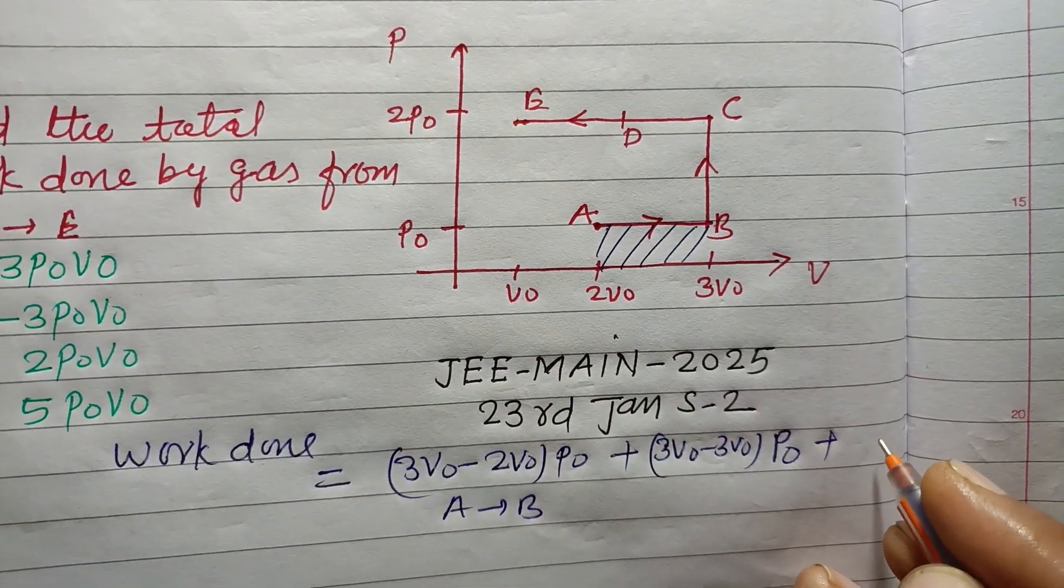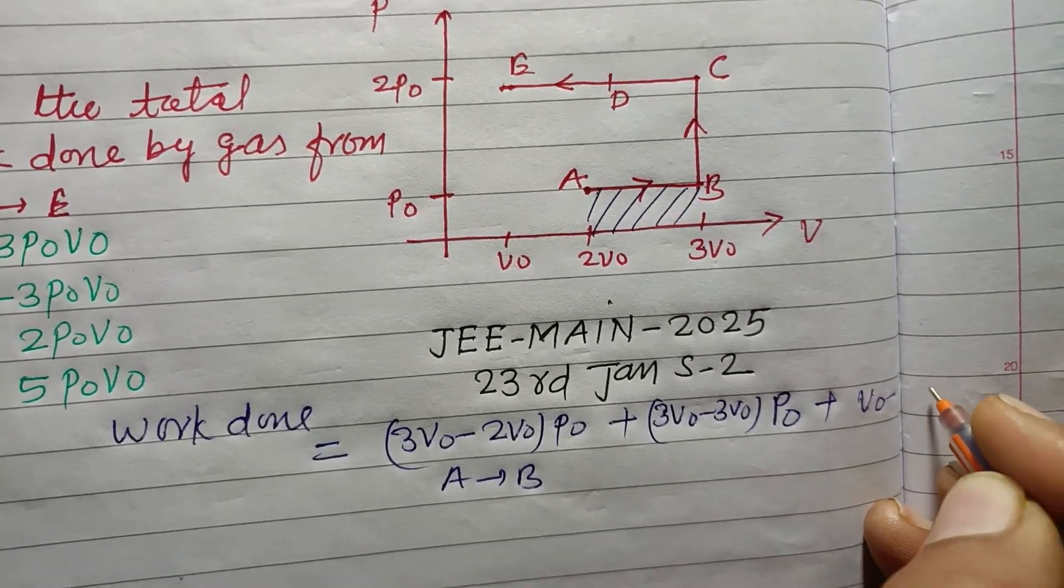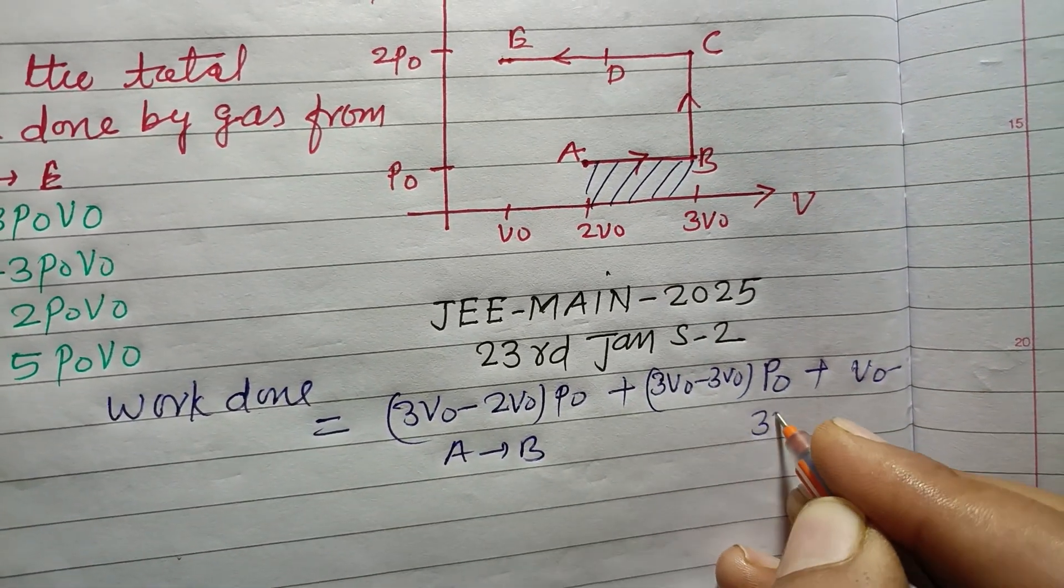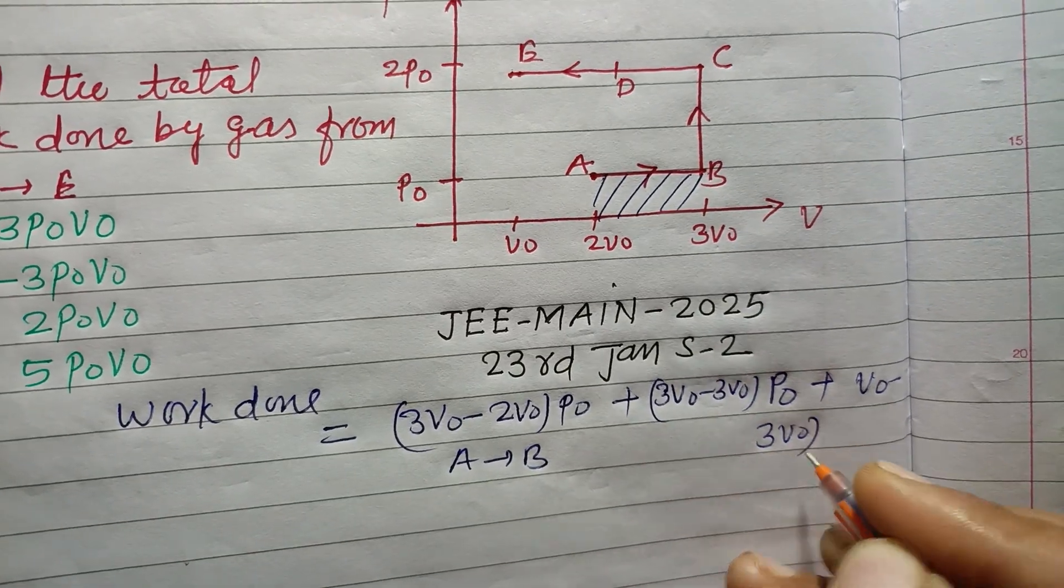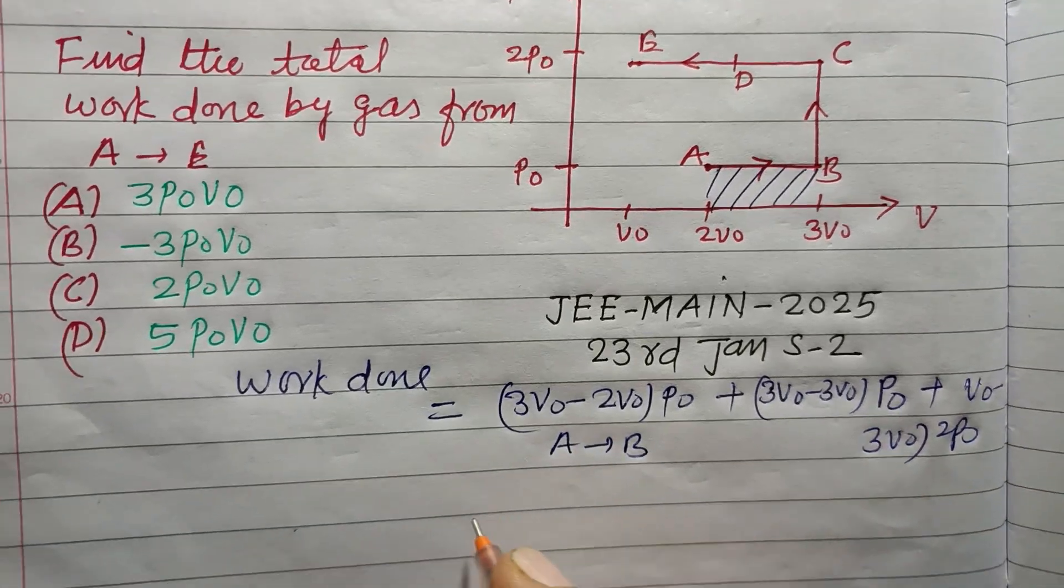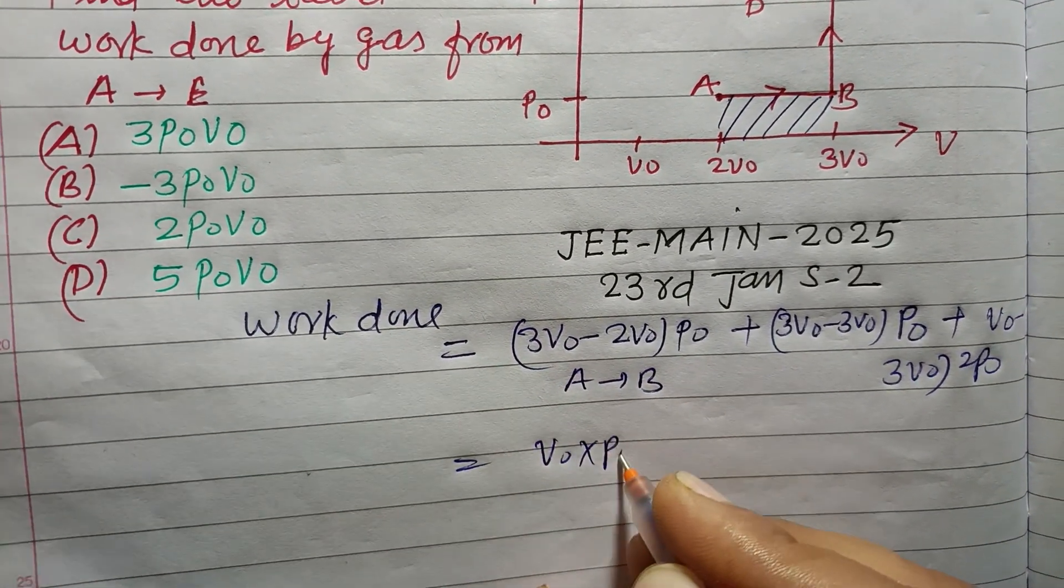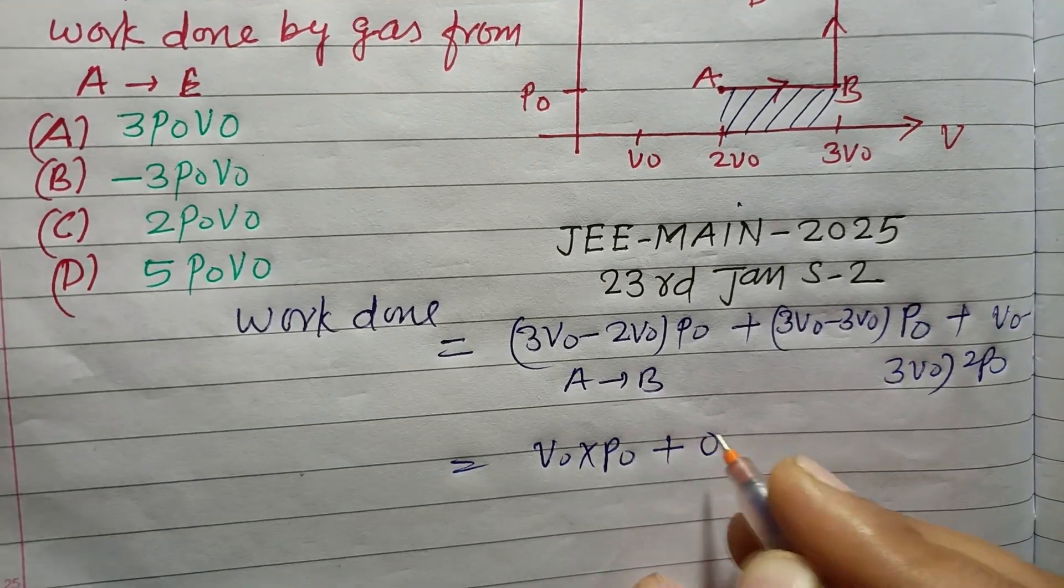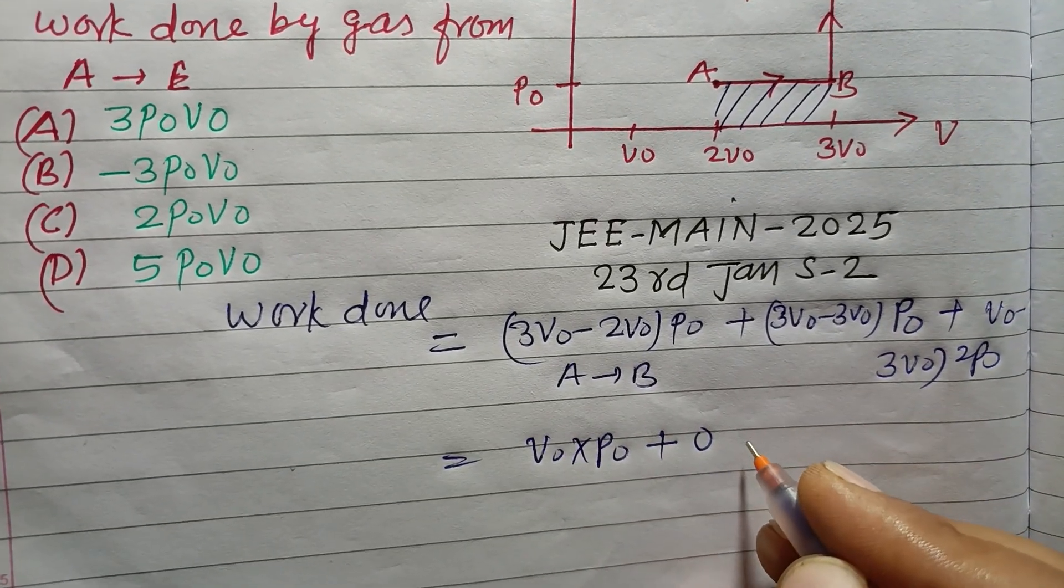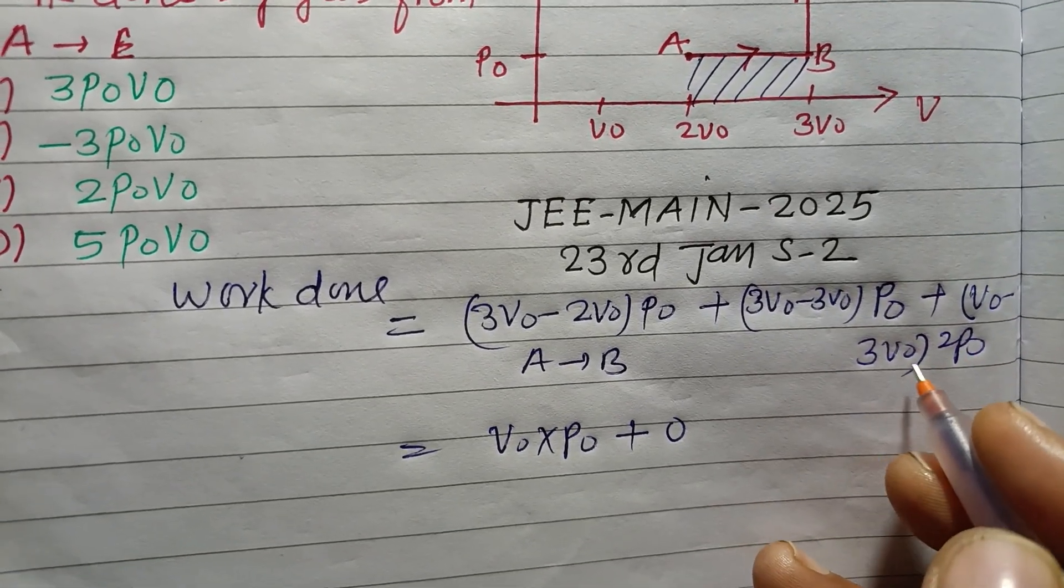So V₀ final minus 3V₀ into pressure 2P₀. Therefore, this is V₀ times P₀ plus this is zero, and this will be V₀ minus 3V₀.